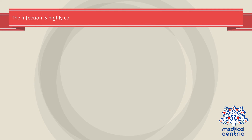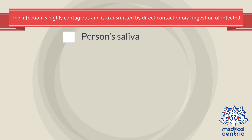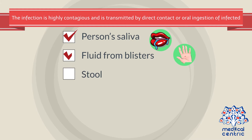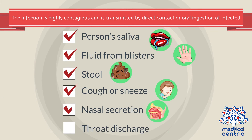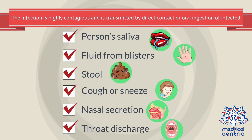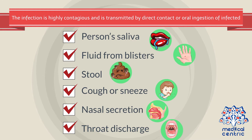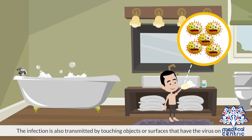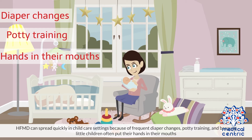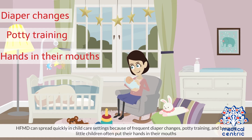The infection is highly contagious and is transmitted by direct contact or oral ingestion of an infected person's saliva, fluid from blisters, stool, respiratory droplets sprayed into the air after a cough or sneeze, nasal secretions, or throat discharge. The infection is also transmitted by touching objects or surfaces that have the virus on them. HFMD can spread quickly in child care settings because of frequent diaper changes, potty training, and because little children often put their hands in their mouths.